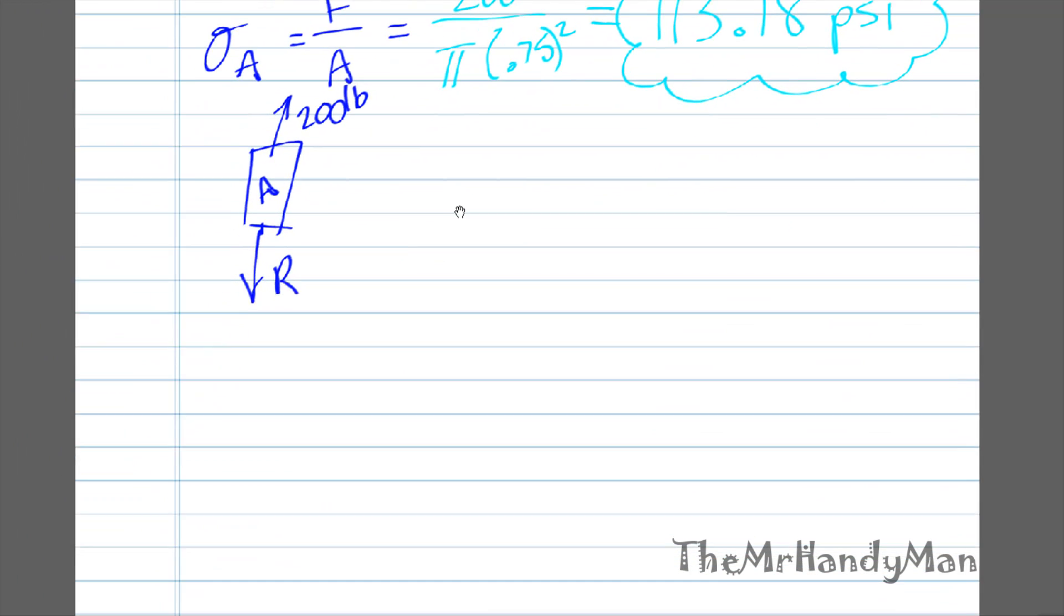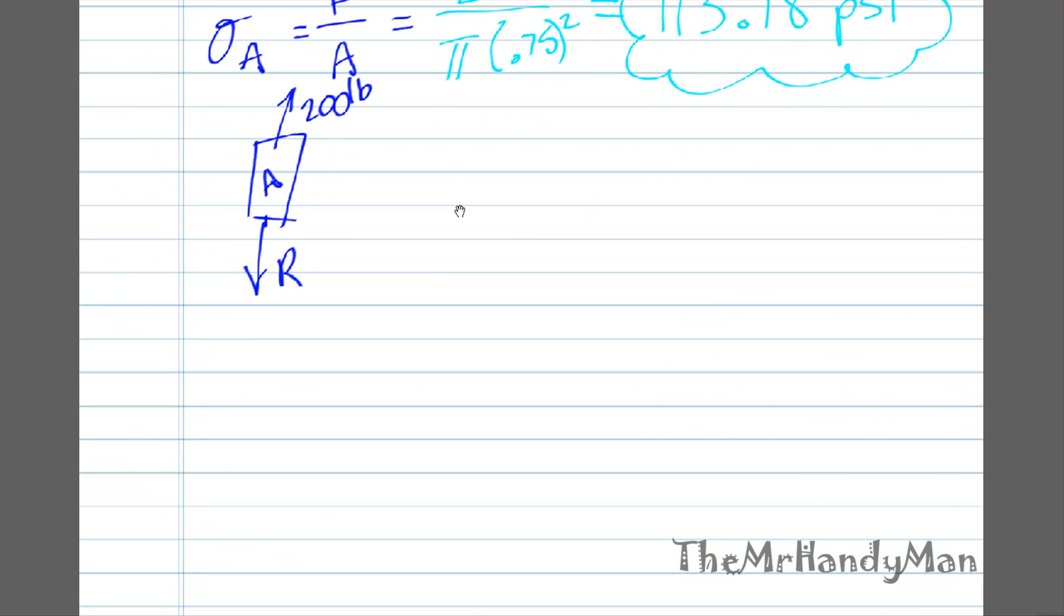What about B? Let's calculate that out. We know that the tension at B is going to be, once again, F over A. Now, when you think of F, I don't want you to think whatever force is being applied onto it, because there is a net force at this situation.